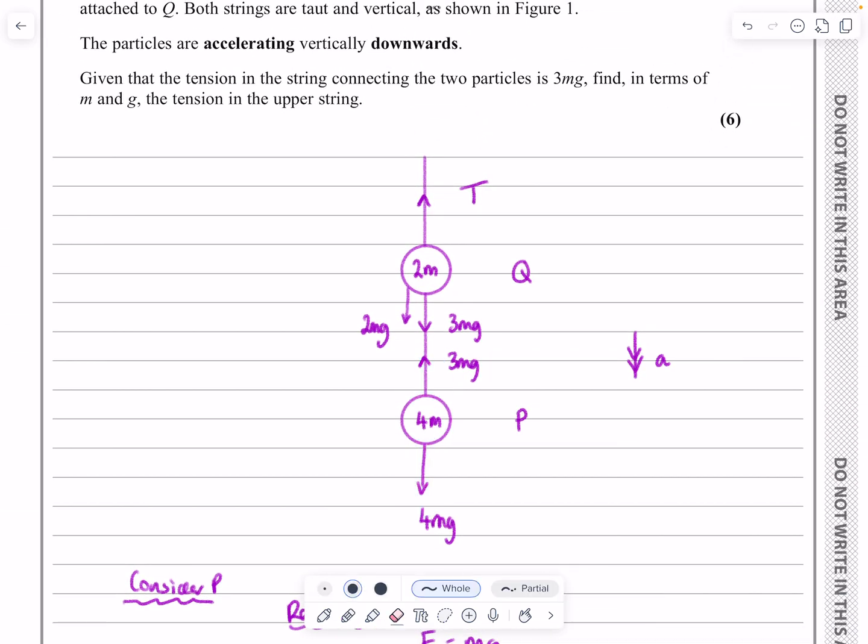Let's get rid of those two. For Q, what have we got going on? Well, I've got the 3mg and the 2mg and the T going upwards. And again, we know that the 3mg and the 2mg are winning out in that battle.